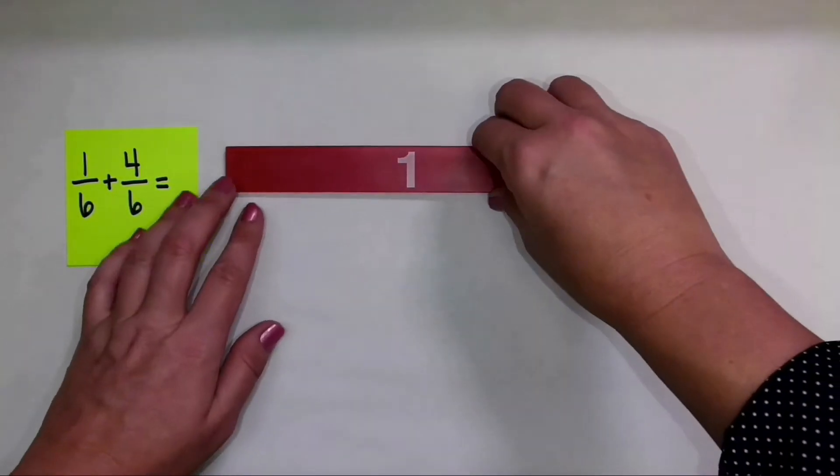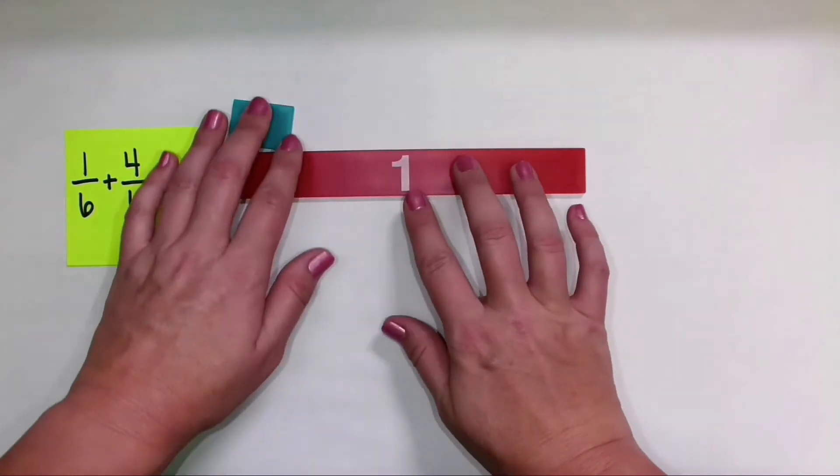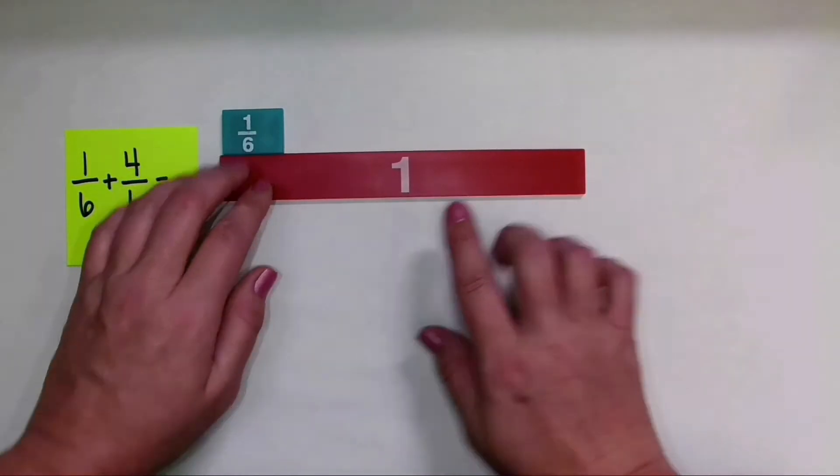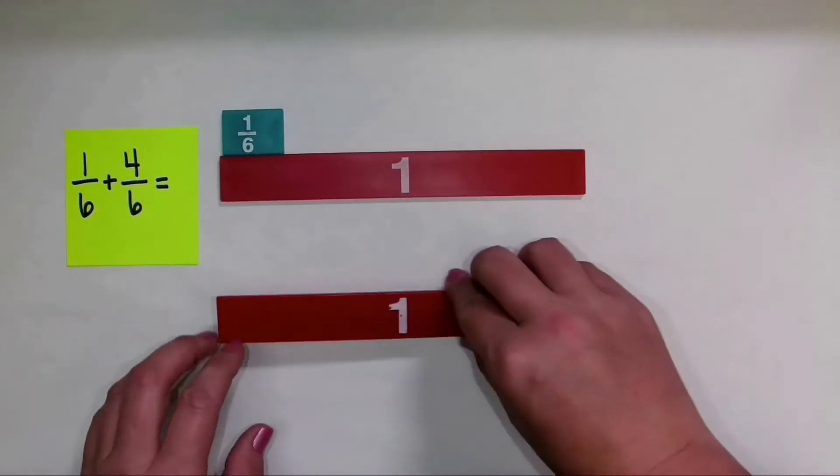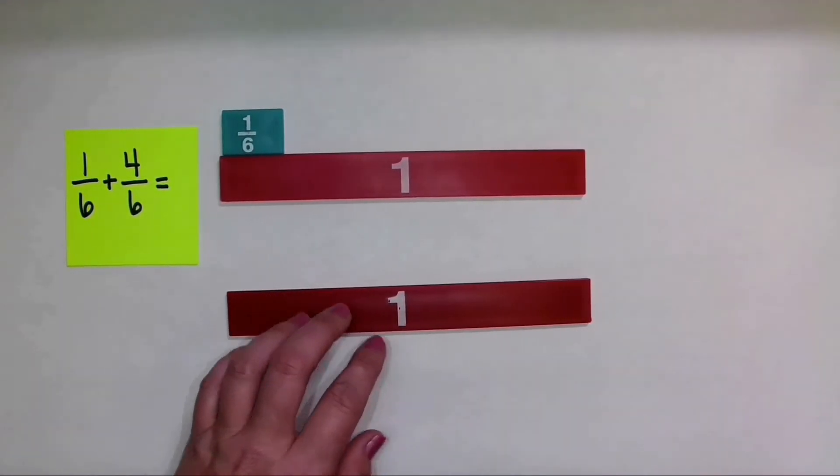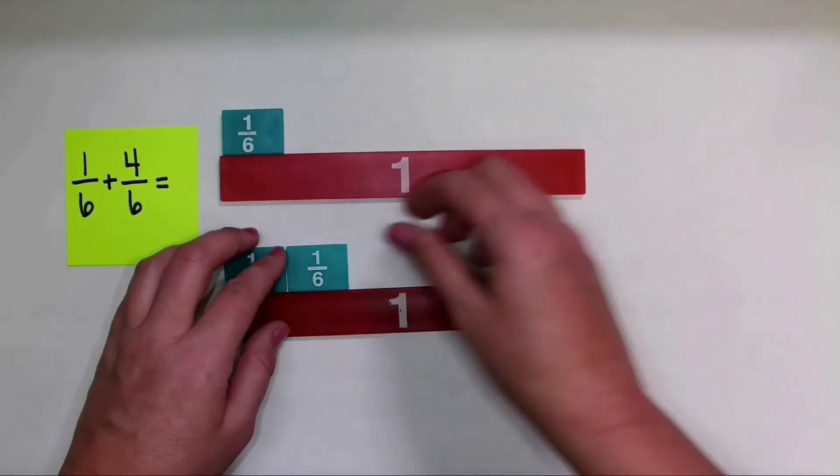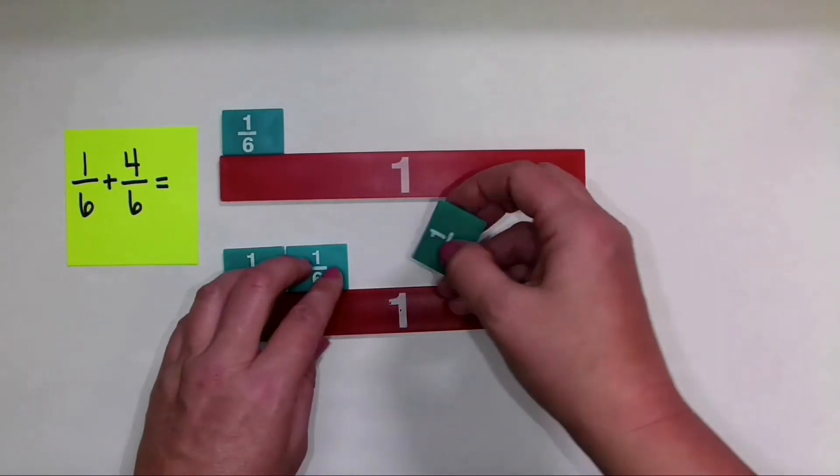All right, so I'm going to show one-sixth here. I'm going to set up my whole and show one-sixth of the length. Remember, this is zero and this is one according to a number line. And then I'm also going to show four-sixths. I'm going to set these up as two different addends because that's what they are.